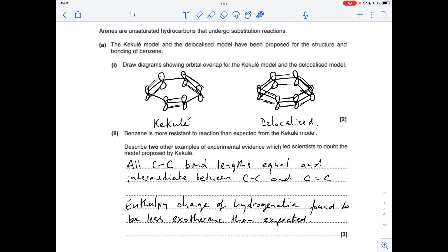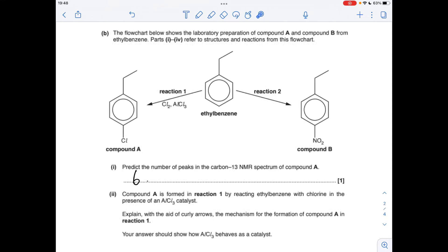Part B now, so the number of peaks in the carbon-13 NMR spectrum of compound A is six. I'll just quickly explain: so that's unique, that's unique, that's unique, so we've got three so far. Equivalent, so that's four. Equivalent, that's five. Unique, so that's six.